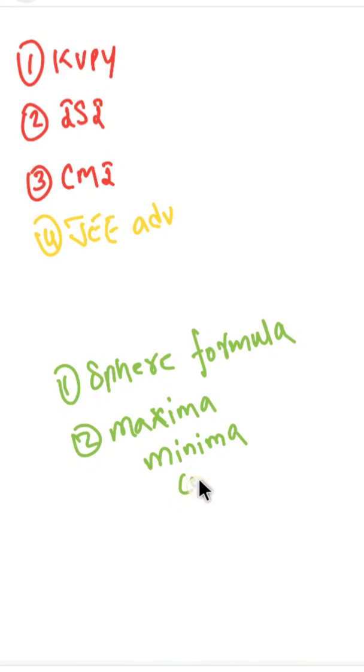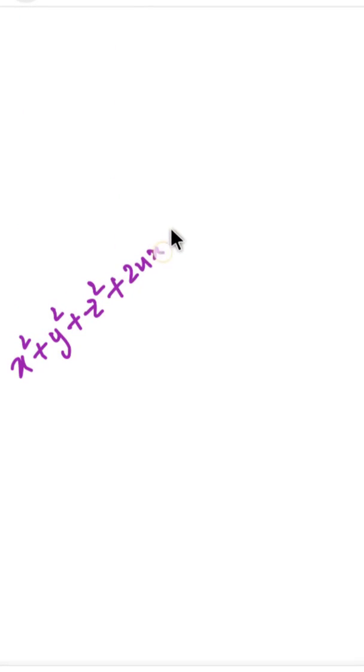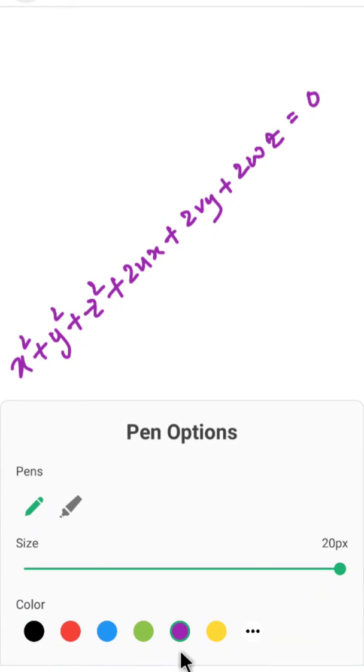I don't teach the maxima-minima concept from scratch here, but we use both concepts in this problem. It's a vital question that mixes 3D geometry with application of derivatives. To begin the solution, we start with the general equation of a sphere, since we're given three points. The equation is: x² + y² + z² + 2ux + 2vy + 2wz + d = 0.